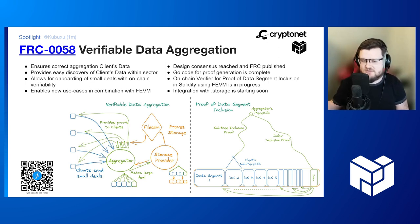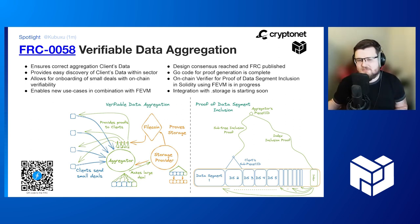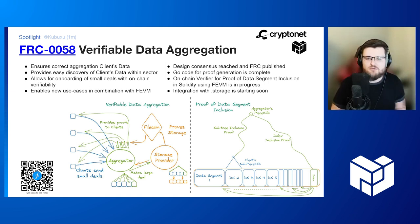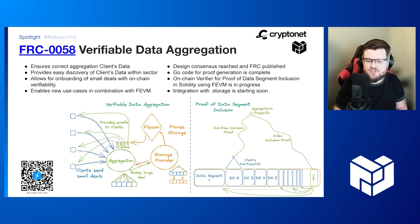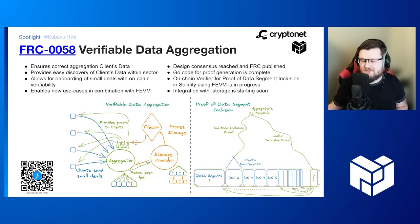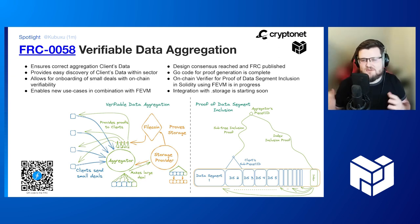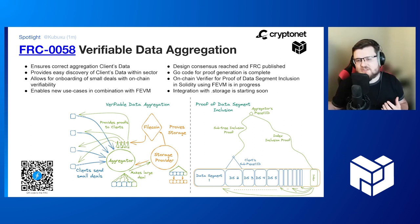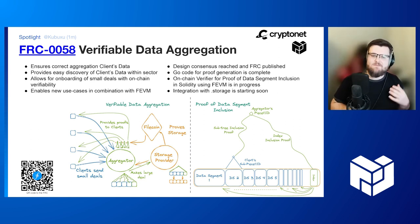The drawback is the client cannot verify that their data was aggregated correctly, and cannot prove it to another party. That's why we created the Verifiable Data Aggregation standard, which produces a Proof of Data Segment Inclusion. This proof ensures correct aggregation of client data within sectors, and allows the client to show that proof to a third party or to a contract on chain — an important use case in FEVM where contracts might want to pay for storage of small deals.